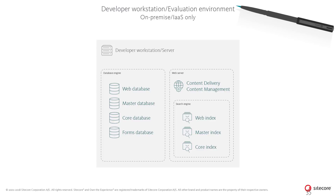In the most simple setup — for example when developing for the Sitecore Experience Manager or deploying a basic setup for feature evaluation purposes — the entire system can run on a single machine. This involves only two underlying systems: a database engine and a web server, where the database engine will host all databases and the web server will host the entire Sitecore application in a single app pool. In this setup, the in-process or memory-based provider will be used for session state storage.